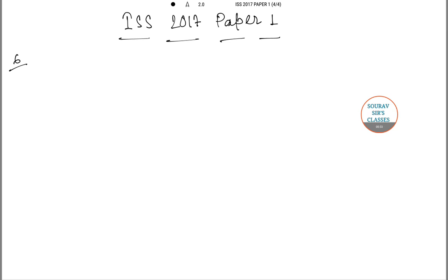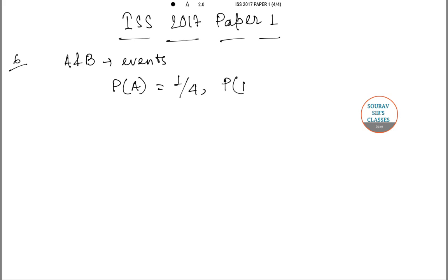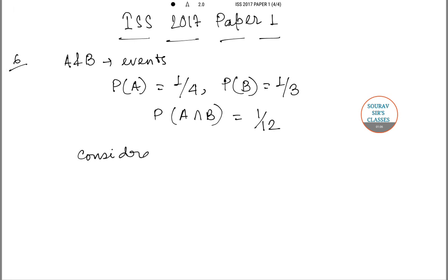In question number six, I'll be reading out the question to you first. A and B are events such that probability of A equals one by four, probability of B equals one by three, and we are also given that probability of A intersection B equals one by twelve. Now we are given a few considerations.